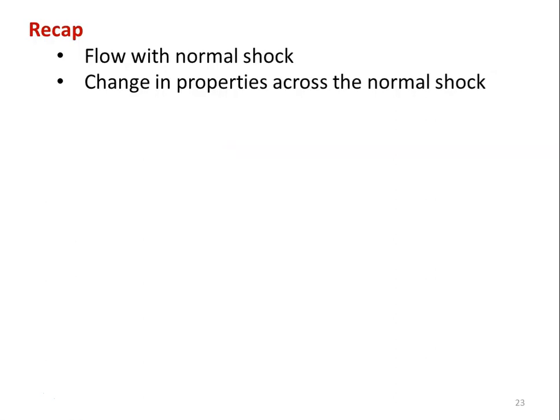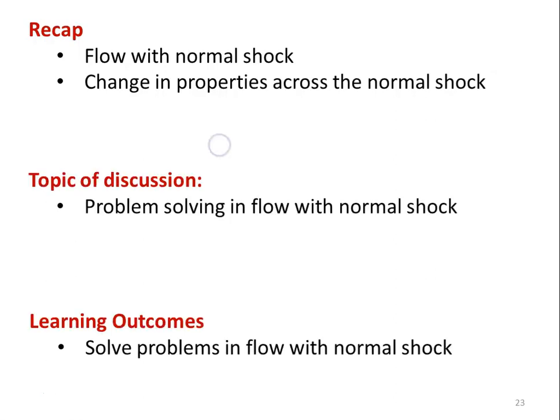We recap from the earlier lecture. We discussed the flow with normal shock in a constant area duct, in the convergent-divergent nozzle, and the variable area duct. We have calculated the change in property across the normal shock wave. In this lecture also, we continue with problem solving in flow with the normal shock. The learning outcome: students will be able to solve problems in flow with the normal shock.